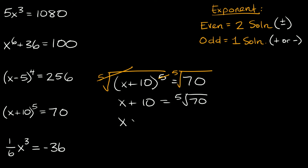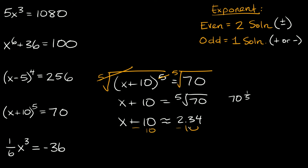The fifth root of 70 is not a clean number — you actually have to put this into your calculator. You could enter it as the fifth root of 70 or as 70 raised to the 1/5 power; either way you get approximately 2.34. So to solve for x we subtract 10 from both sides, and x is approximately equal to negative 7.66. That's our one answer.